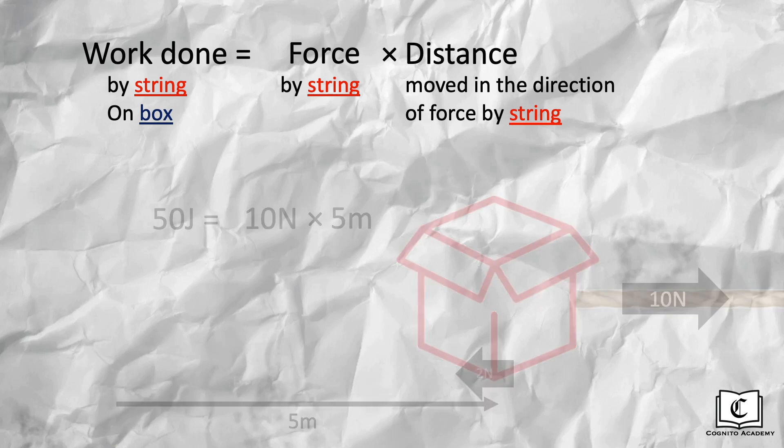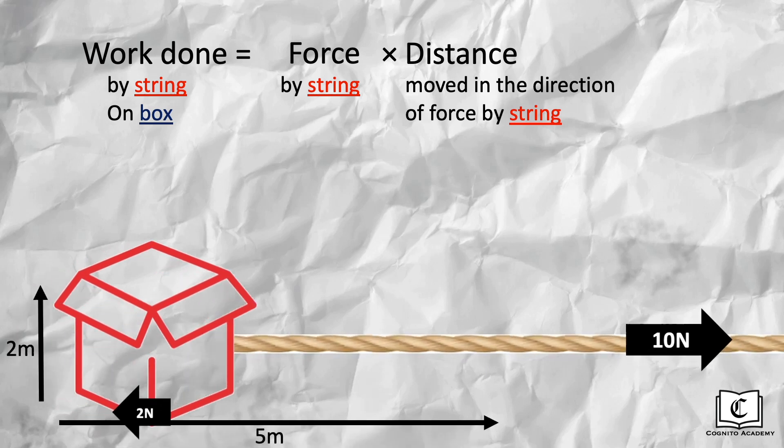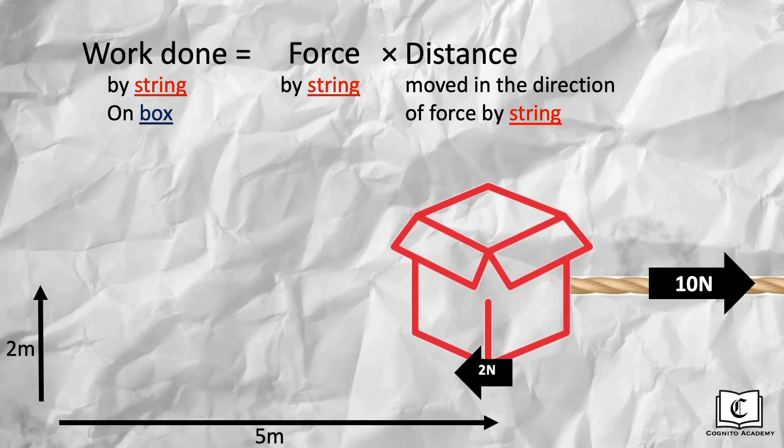In another scenario, the same string pulls the box with a force of 10N to the right, with a frictional force of 2N. But what I've changed now is that the distance travelled is diagonal, 5 meters to the right and 2 meters to the top. So let's calculate the work done.